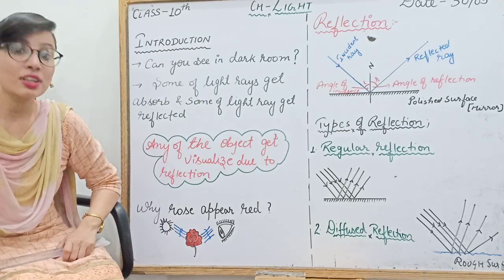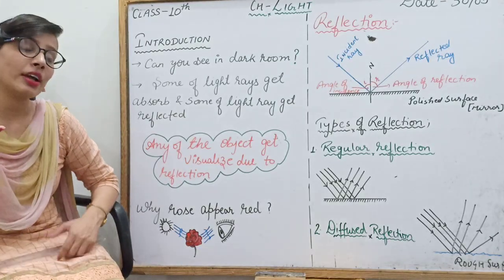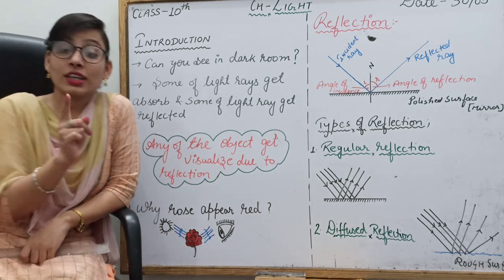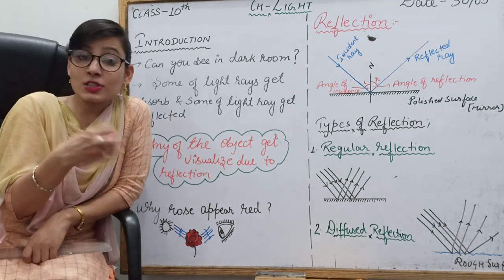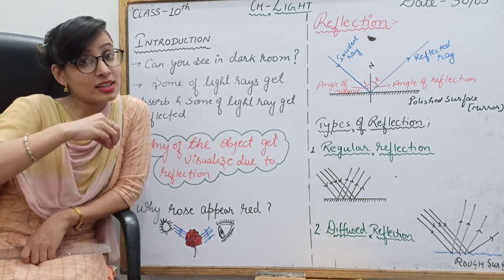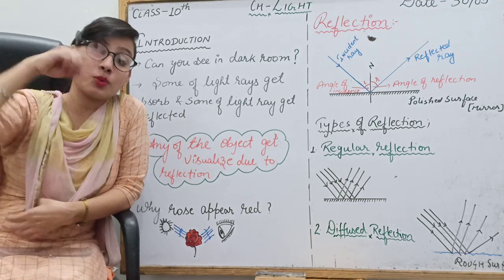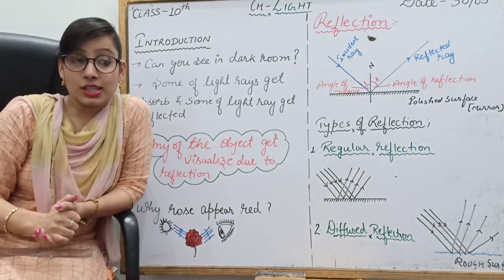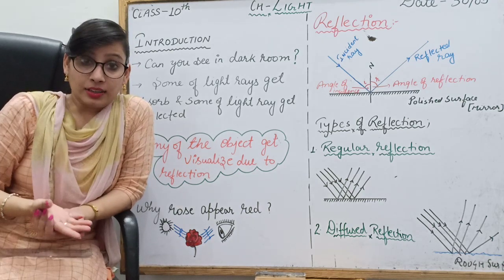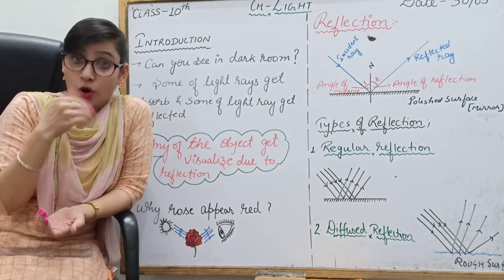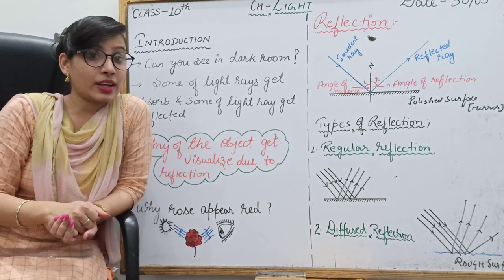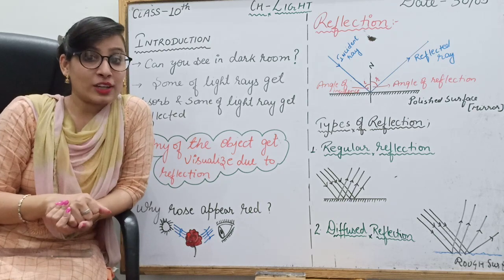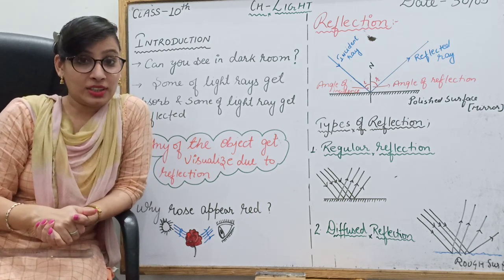A green shirt appears green because when white light falls on it, all other constituent colors get absorbed, and only green color is reflected. That is why the shirt appears green. Now one more question: Why does a white object appear white? And why does a black object appear black?